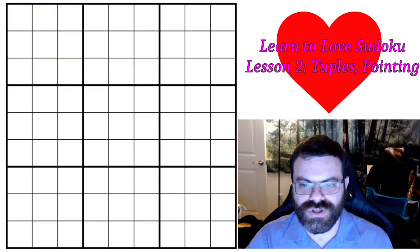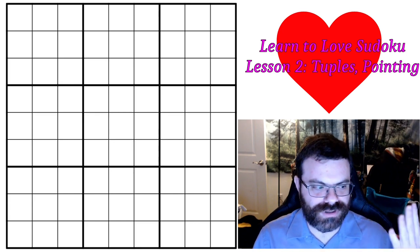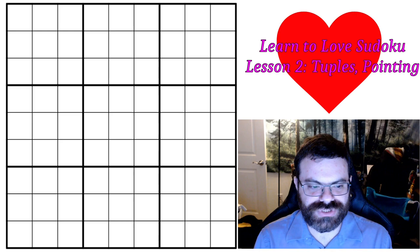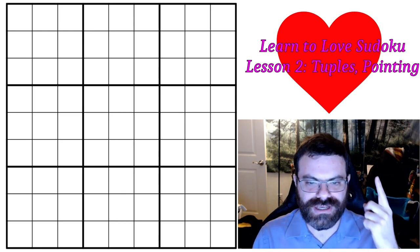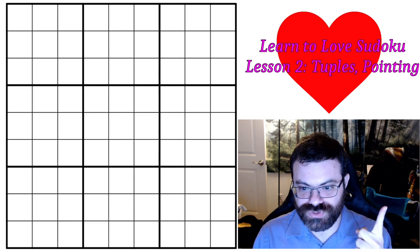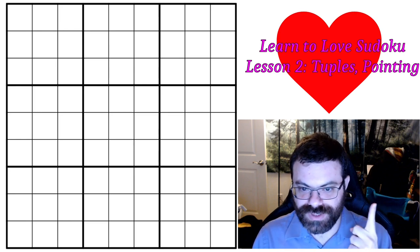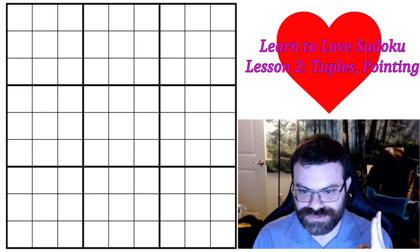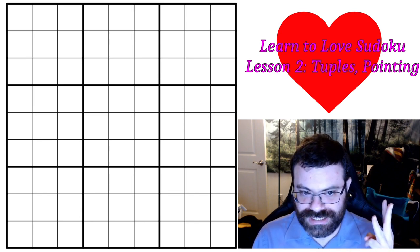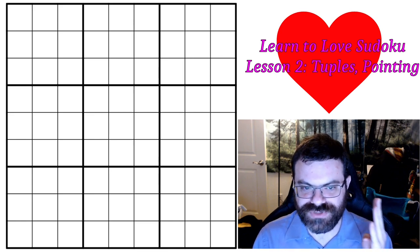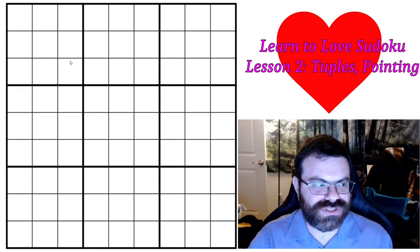So those are the four concepts I want to go over in this video. Just to list them again: we have naked tuples, which are going to be pairs, triples, and quadruples; we have hidden tuples, which are hidden pairs, hidden triples, and hidden quadruples; we have pointing; and we have box line reduction, which is very similar to pointing. So let's go over some examples.